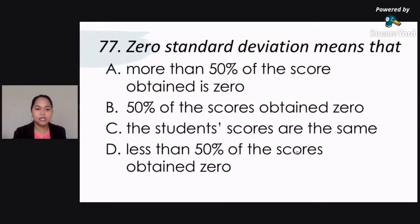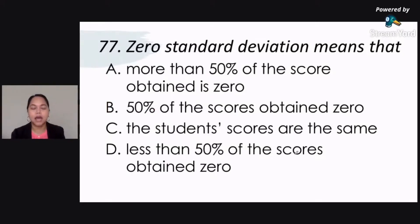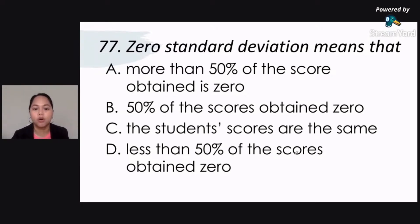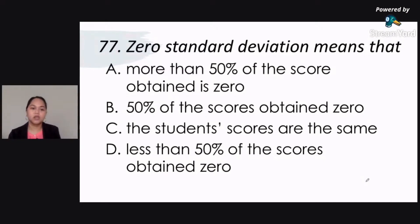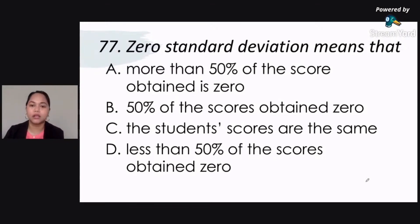We go to number 77. Zero standard deviation means that: A) more than 50% of the score obtained is zero; B) 50% of the scores obtained is zero; C) the student scores are the same; D) less than 50% of the scores obtained is zero. So which one do you think is the correct answer for zero standard deviation?